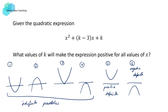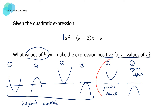The parabola will always concave up if the coefficient of x squared is positive. In this question, our coefficient of x squared is one, and because of that we're always going to have a parabola that concaves up. What we want to find is the value of k that will make this expression positive for all values of x — in other words, we're looking for a positive definite parabola.